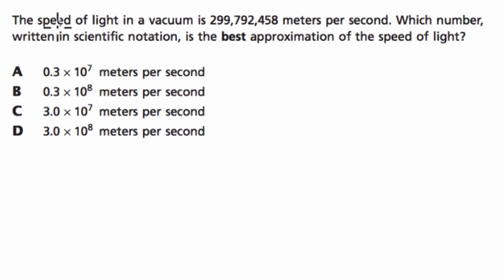Alright, so let's read this question. The speed of light in a vacuum is, and this is amazing, 299,792,458 meters per second. Beautiful. Which number, written in scientific notation, is the best approximation of the speed of light.